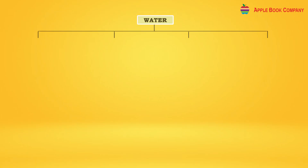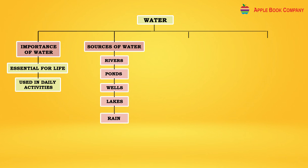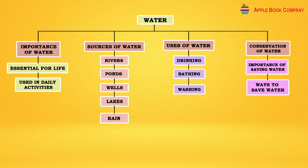Mind Map - Water. Importance of water: It is essential for life and used in daily activities. Sources of water: Rivers, ponds, wells, lakes, and rain. Uses of water: Drinking, bathing, washing. Conservation of water: Importance of saving water and ways to save water.